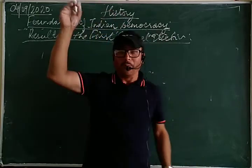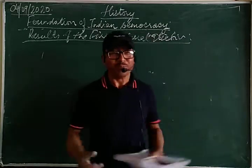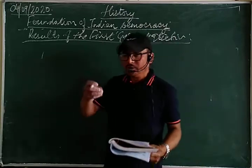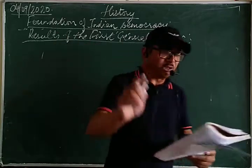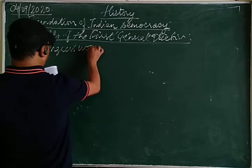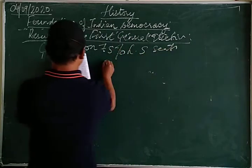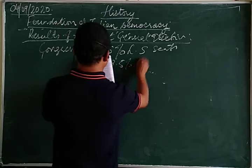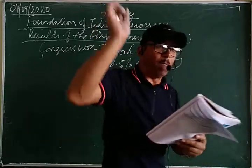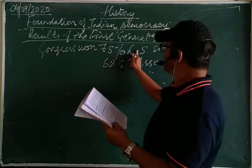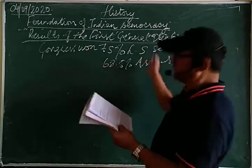In the first election, Congress fared very well. People of India had not forgotten Congress's great deeds in freeing the country from the British. Congress won 75% of Lok Sabha seats and 68.5% of state assembly seats — they completely swept the polls.